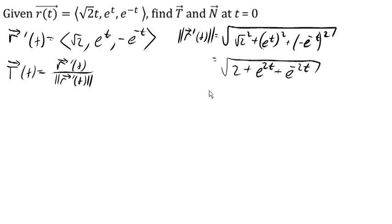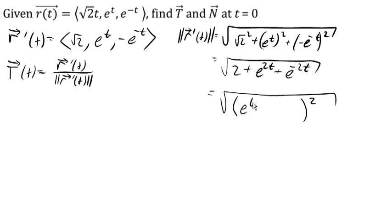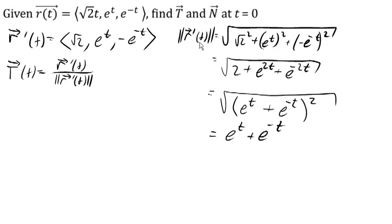Now oftentimes with this type of problem, we hope that this square root will simplify. We ask: is there some way to factor this as a perfect square? We can think of e to the 2t as e to the t squared, and e to the negative 2t as e to the negative t squared. If we multiply out (e to the t plus e to the negative t) squared, the outer and inner terms both give e to the t times e to the negative t, which is 1, so they add up to 2. That matches. So the magnitude of the tangent vector is just e to the t plus e to the negative t.